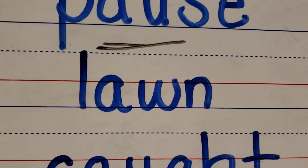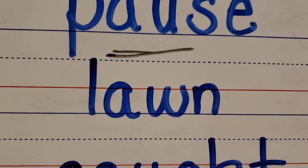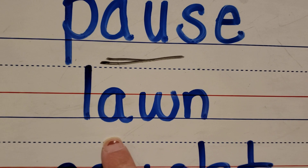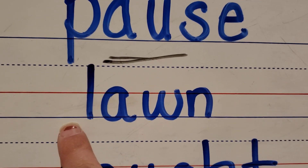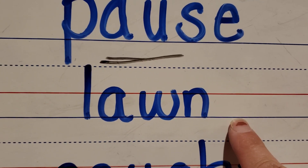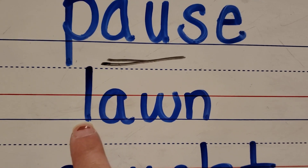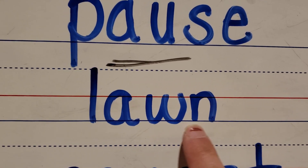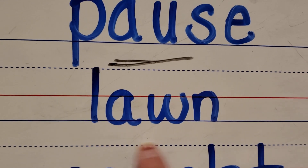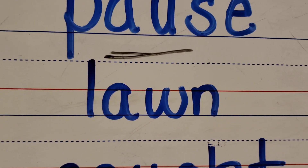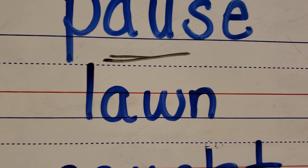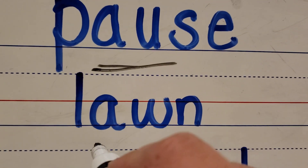Next word: L-AWN, LAWN. What letters make the AW sound? Yep, A-W.